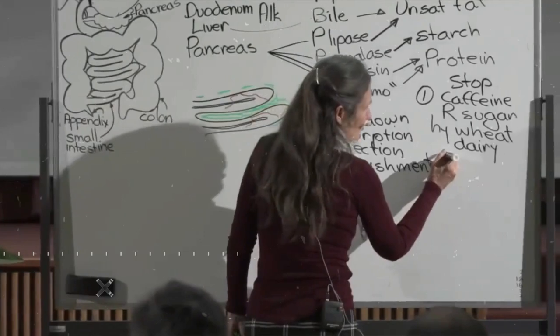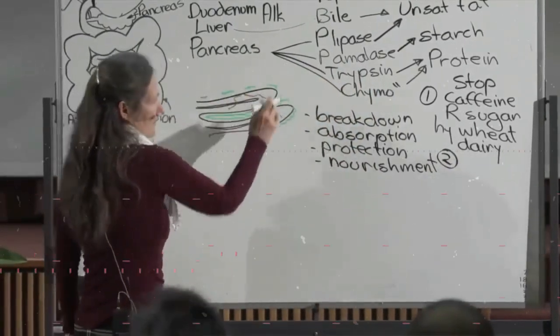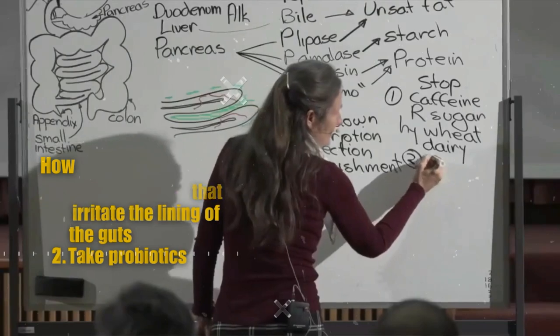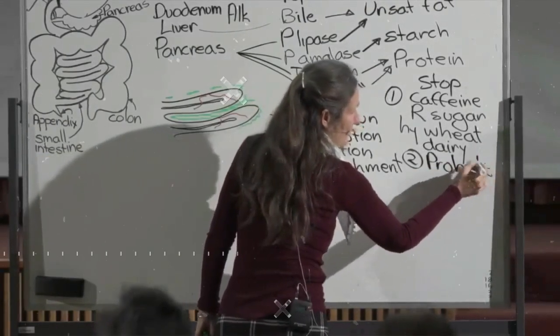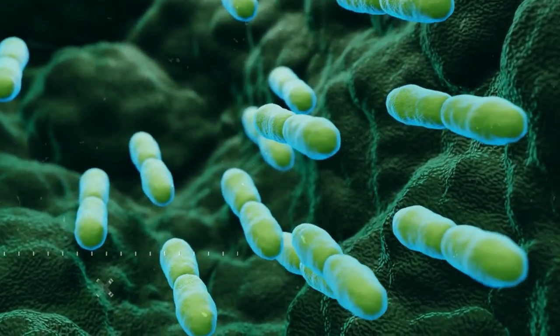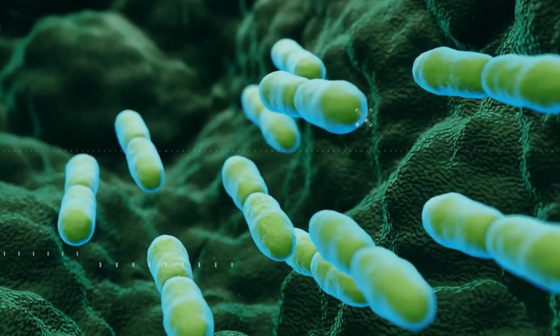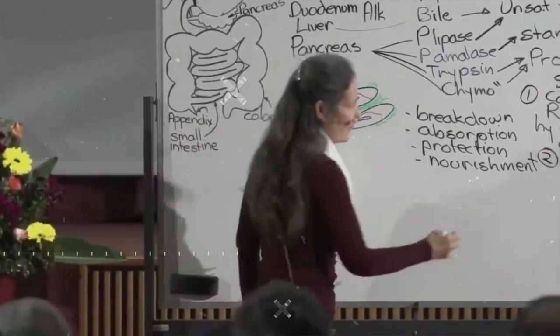Number one, stop all the things that can irritate that lining. Number two, take a probiotic. What's a probiotic? A lactobacillus acidophilus bifidus bacterium supplement. Do you know they are the two permanent bacteria that live in your gut? All the others come from those two. Number three, do you remember Psalm 103 verse 14?